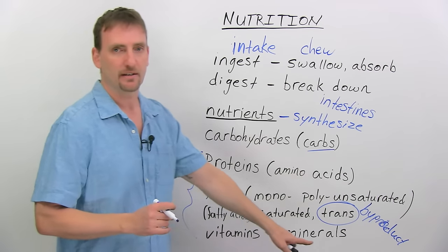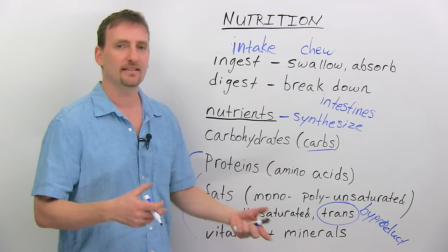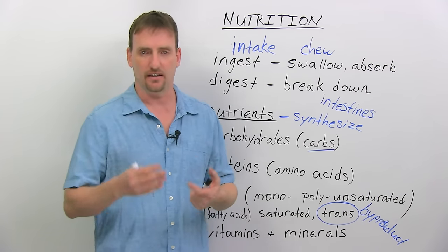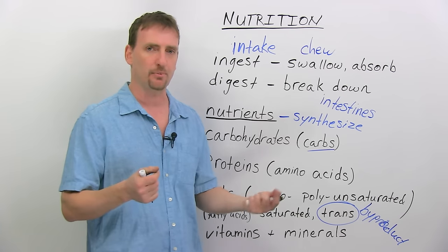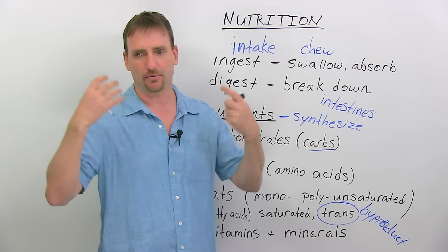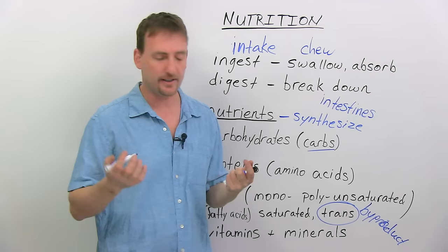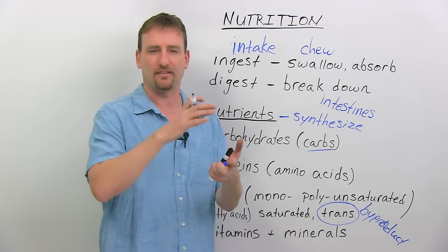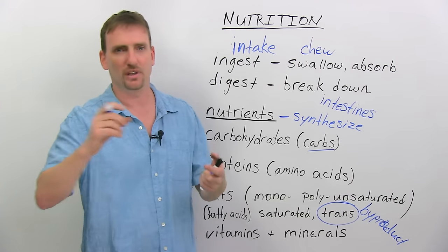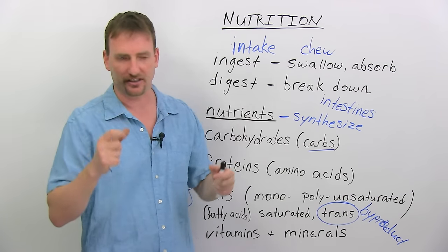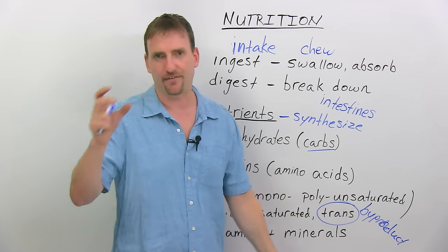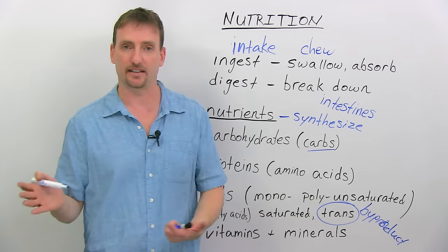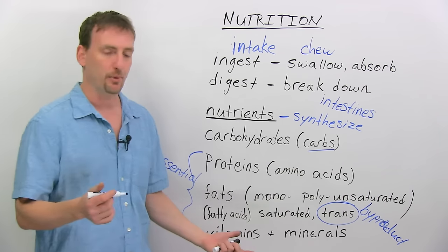And then there are vitamins and minerals. Basically, these add or aid the functions of the body. They help control chemicals, they help create enzymes, they help different organs work properly. When we're talking about vitamins, we're talking about vitamin A, B, C, B12, D5, all different types of letters and numbers. Minerals have their own names: iron, zinc, magnesium, calcium. These are all very important.